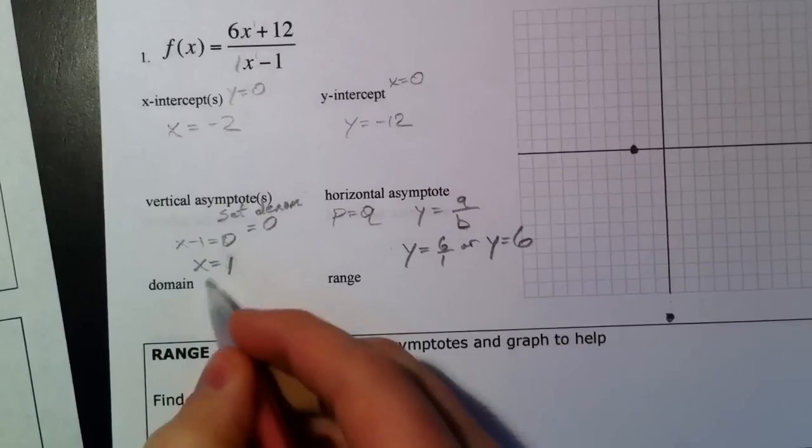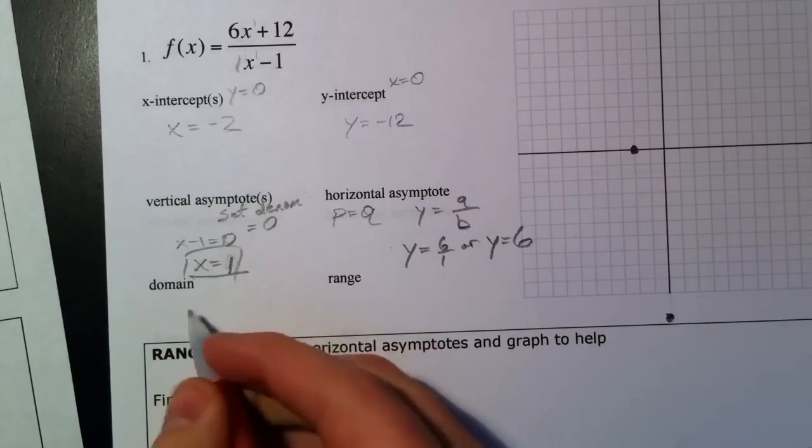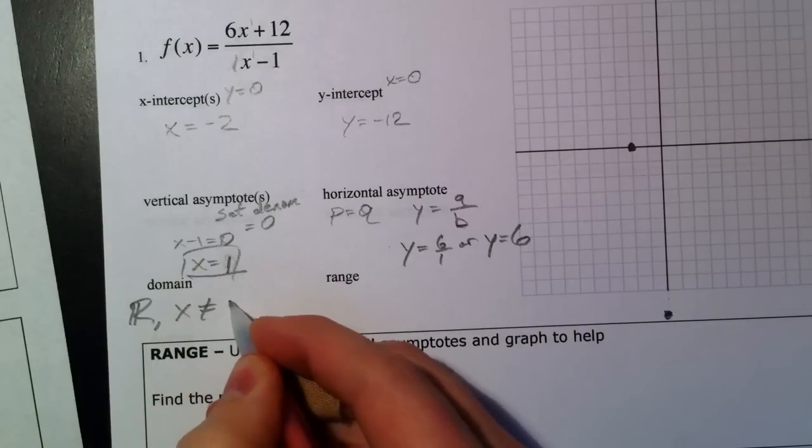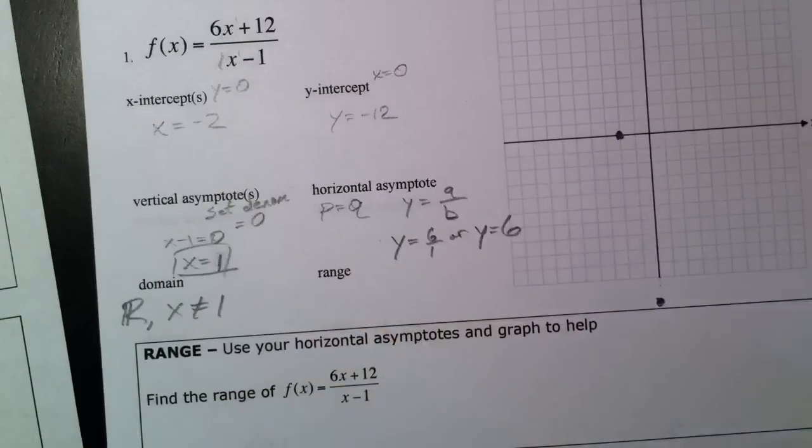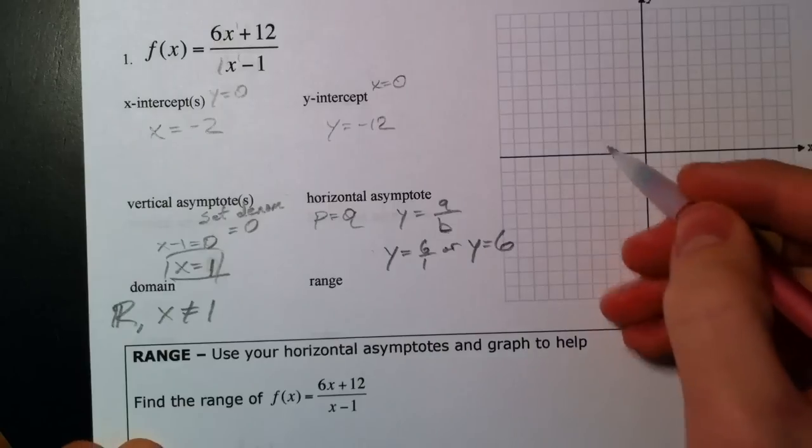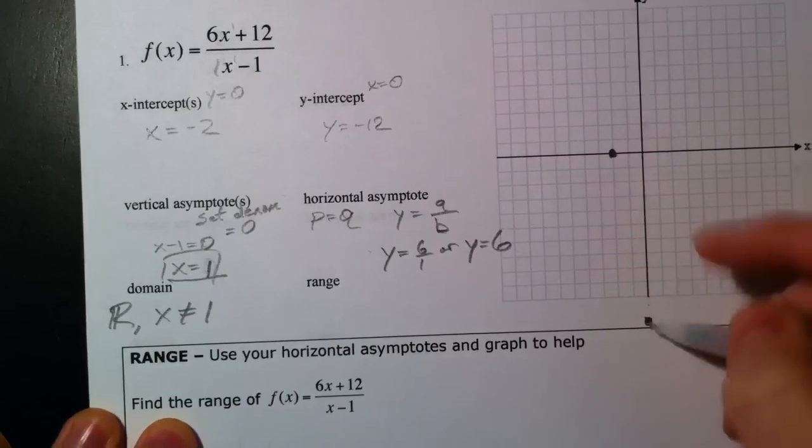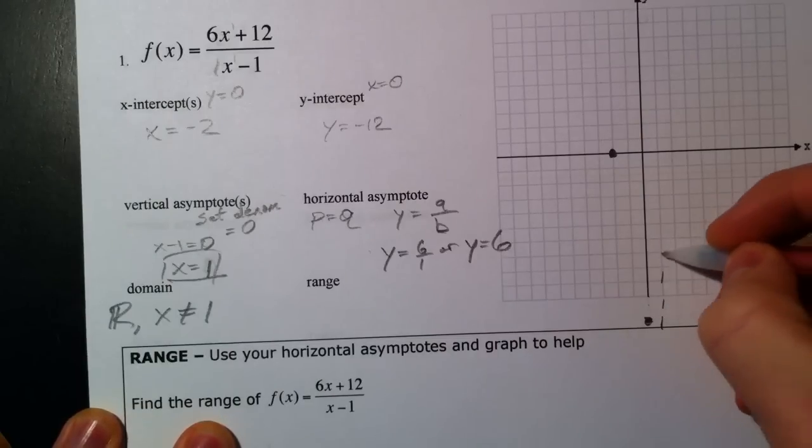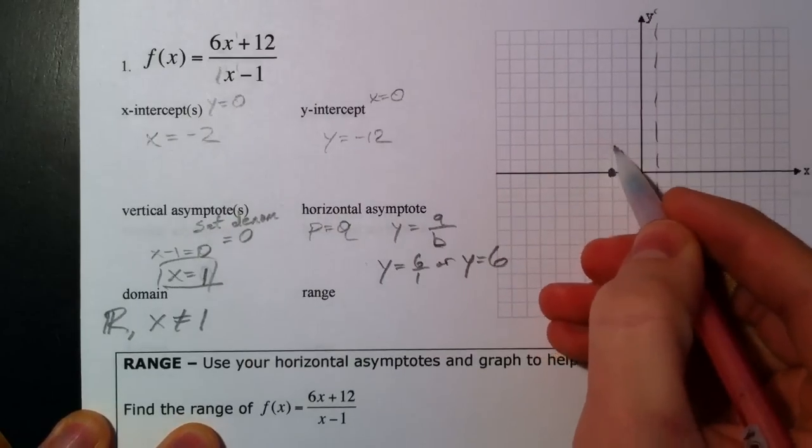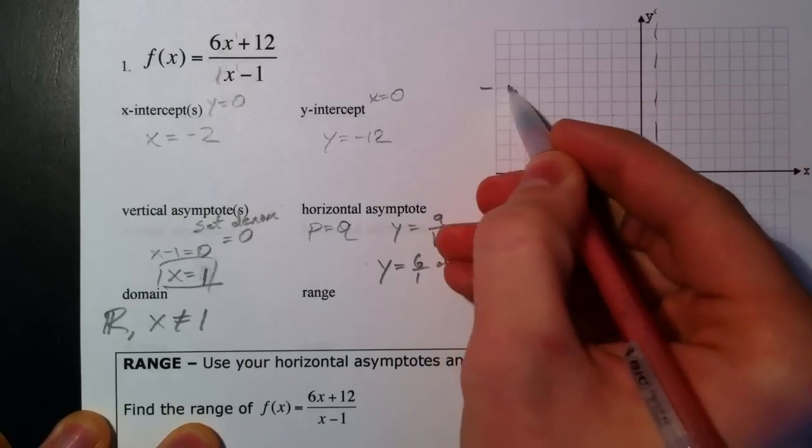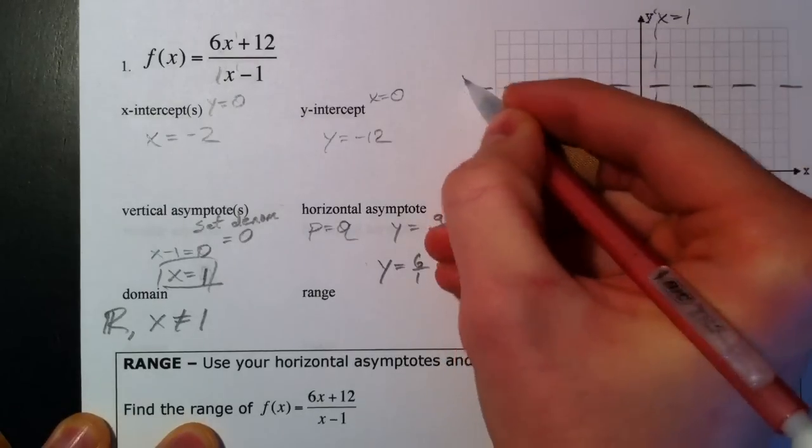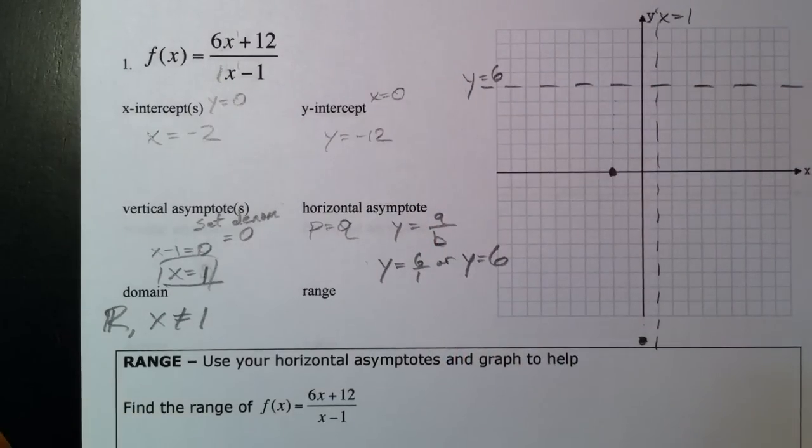Our domain, we talked about, was very closely related to our vertical asymptotes. It's going to be everything except all real numbers, except x can't equal 1. And our range, we're going to come back to. So, x equals negative 2, y equals negative 12. We plotted those. Let's graph our vertical asymptote. Use a dashed line, because it's not actually part of our graph, but it's going to definitely help us graph it. Let's use y equals 6. And this all, we should be able to find without a calculator. And we haven't used it yet.